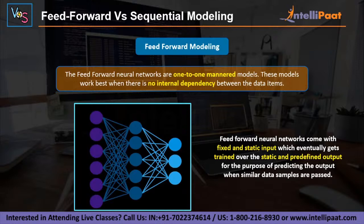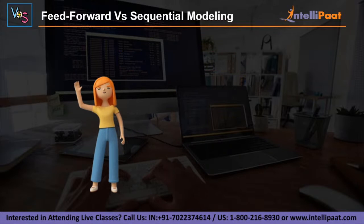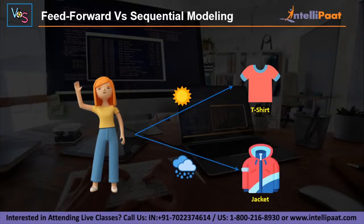The first example is about feedforward data modeling. You can consider feedforward models as one-to-one mannered models. These deep learning models work best when there is no internal dependency between the data items. For instance, consider imagery data — one image can be of a sea and another of a building, and there is no dependency between these data values. These models come with fixed and static input which gets trained over static and predefined output. The person on the screen is Rachel, and she has decided that for the approaching monsoon season, she will wear a t-shirt when the day is sunny, and a waterproof jacket if it's rainy.